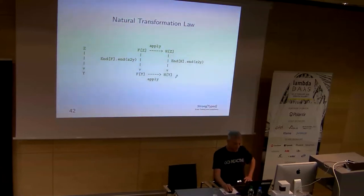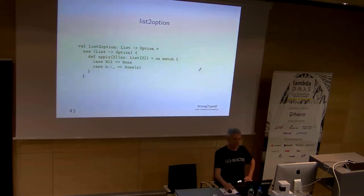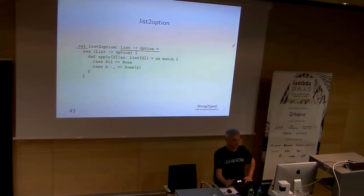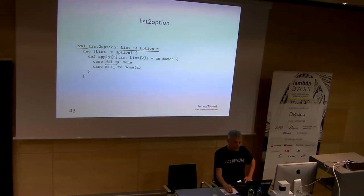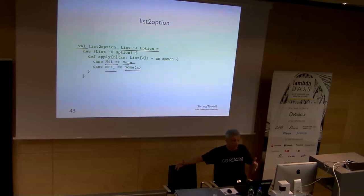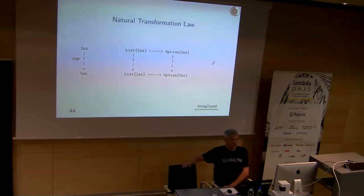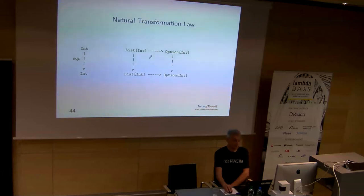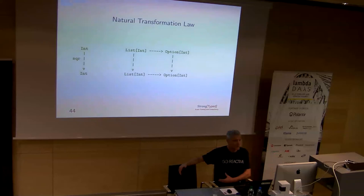An example: a natural transformation from List to Option. If the list is empty, it's None; if there's something in the list, take the first element and put it in Some. This is completely agnostic of what Z is. For example, whether you first square the elements and then apply the natural transformation, or first apply the natural transformation and then square — it's the same thing. A natural transformation is just natural.